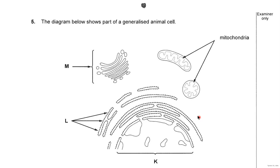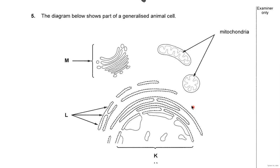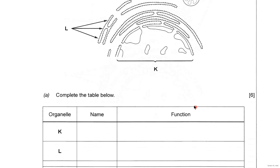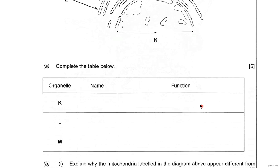Okay, this is question five, the final question in the homework booklet. So we've got a diagram here of an animal cell. Okay, and the question starts off by this table where you have to name the structures and then give the function.